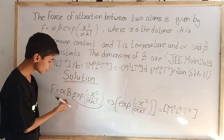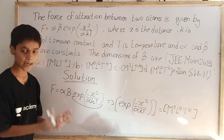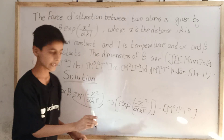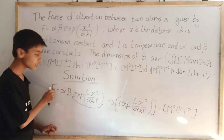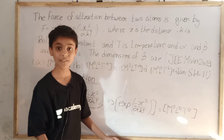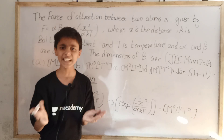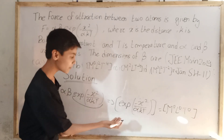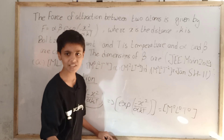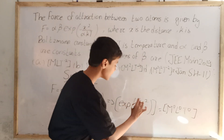From this we can find the dimensions of alpha. For beta, we can say that the dimensional formula of beta equals the dimensions of F divided by the dimensions of alpha. So we require the dimensions of force and alpha. Force every student knows: MLT⁻². But how do we find alpha since it is a constant? We find it through this equation.